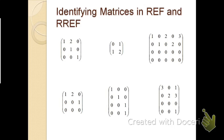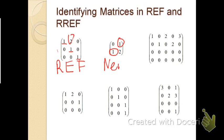For the first matrix, we notice leading ones in each row, but one entry above a leading one is not zero, so this is REF but not RREF. For the second matrix, the leading ones are not further to the right than the previous row's leading entry, so this is neither REF nor RREF.